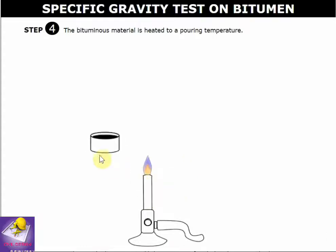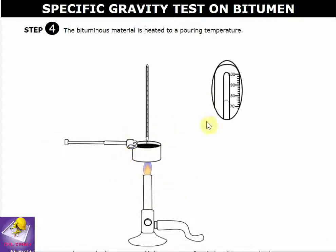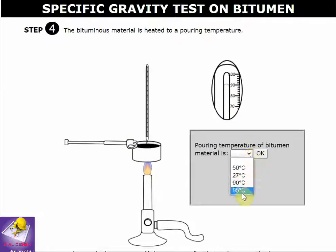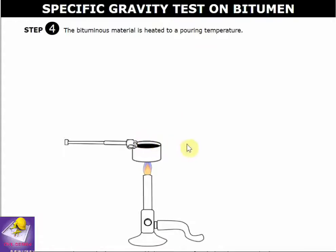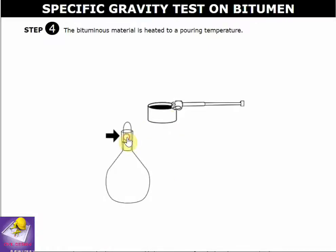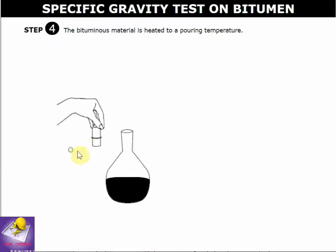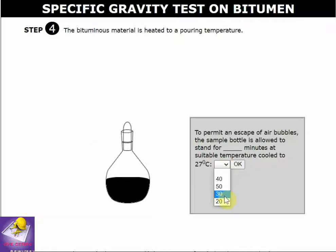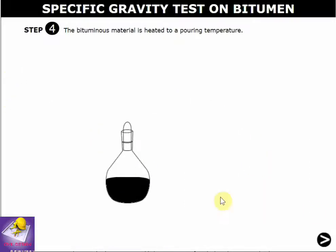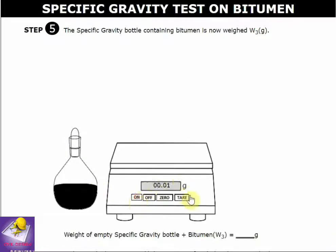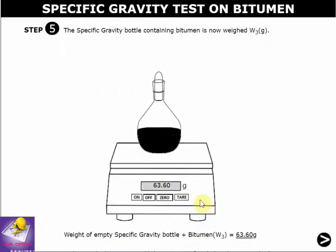Turn on the Bunsen burner and heat the bitumen to 90 degrees Celsius. Turn off the Bunsen burner, open the stopper of the specific gravity bottle, and fill it approximately halfway with bitumen. Put the stopper back. The weight of the specific gravity bottle plus bitumen, W3, is 63.60 grams.